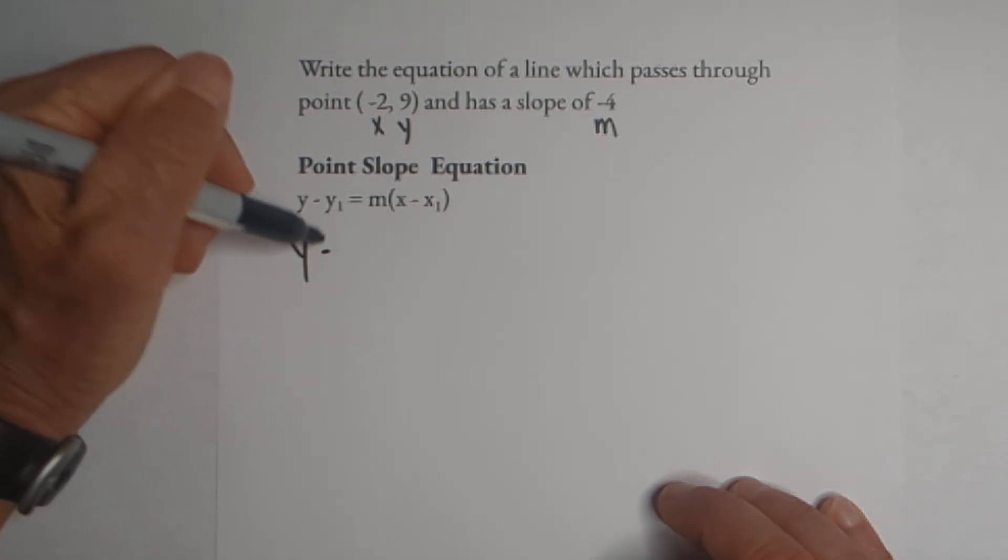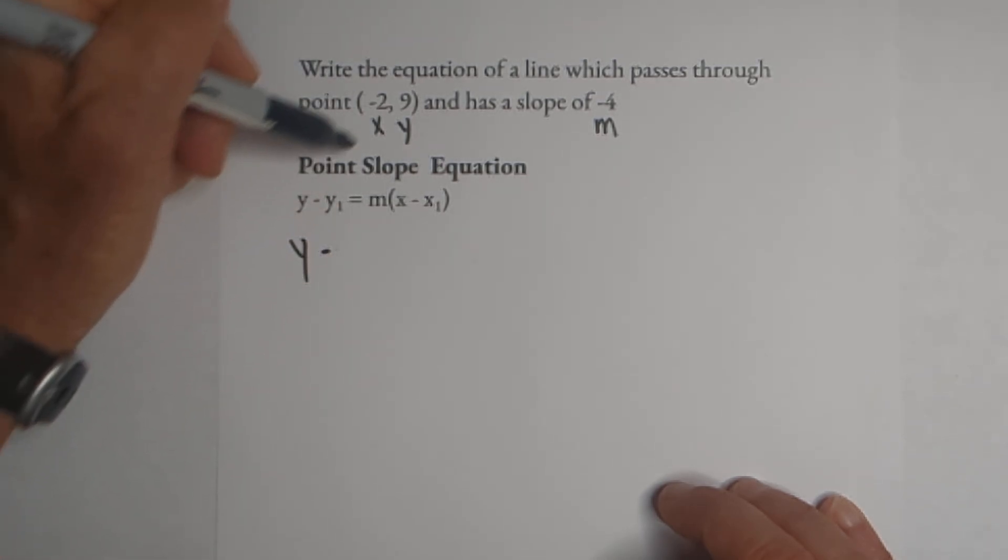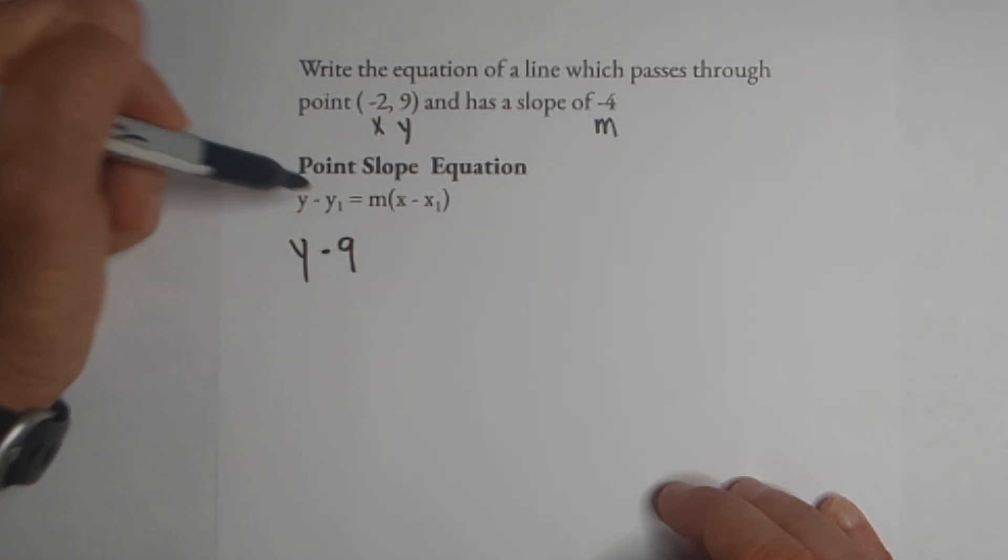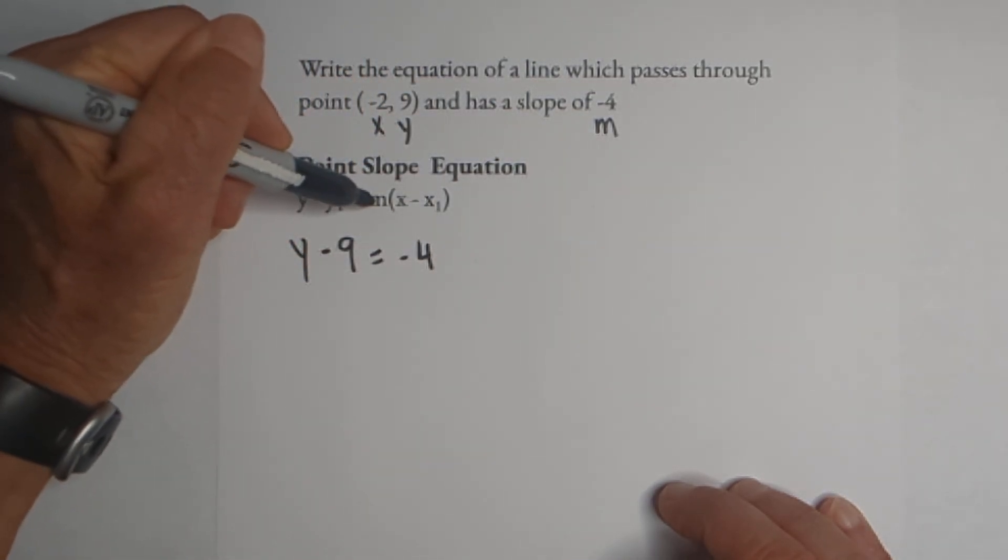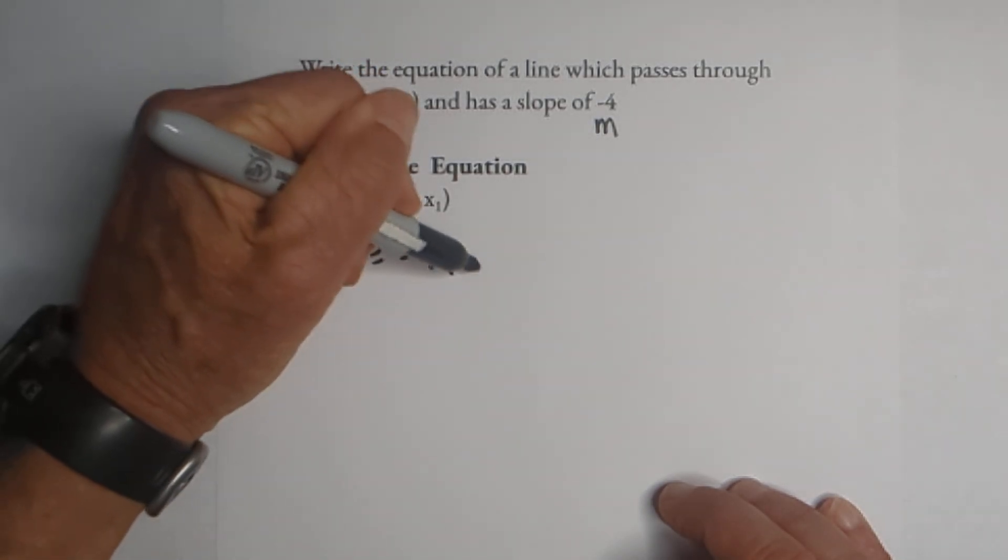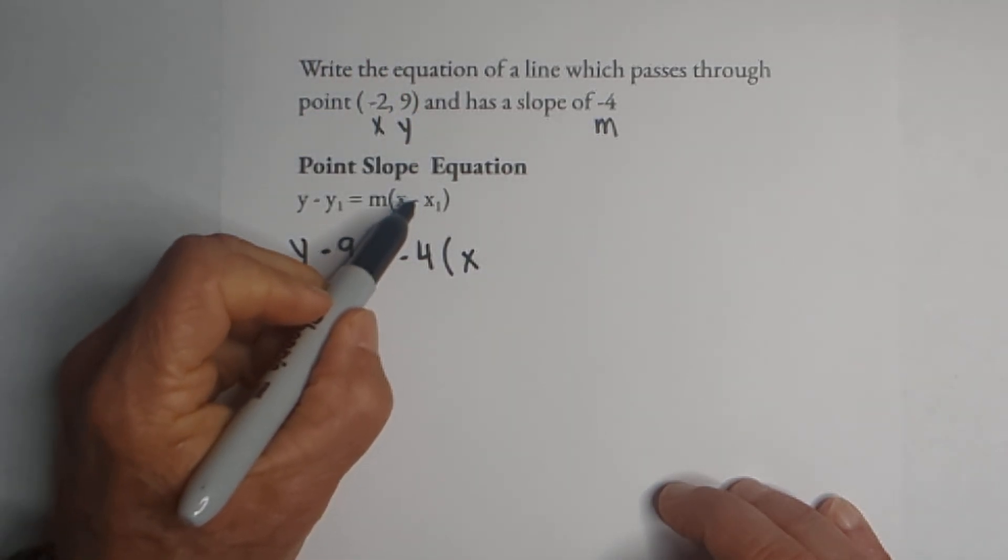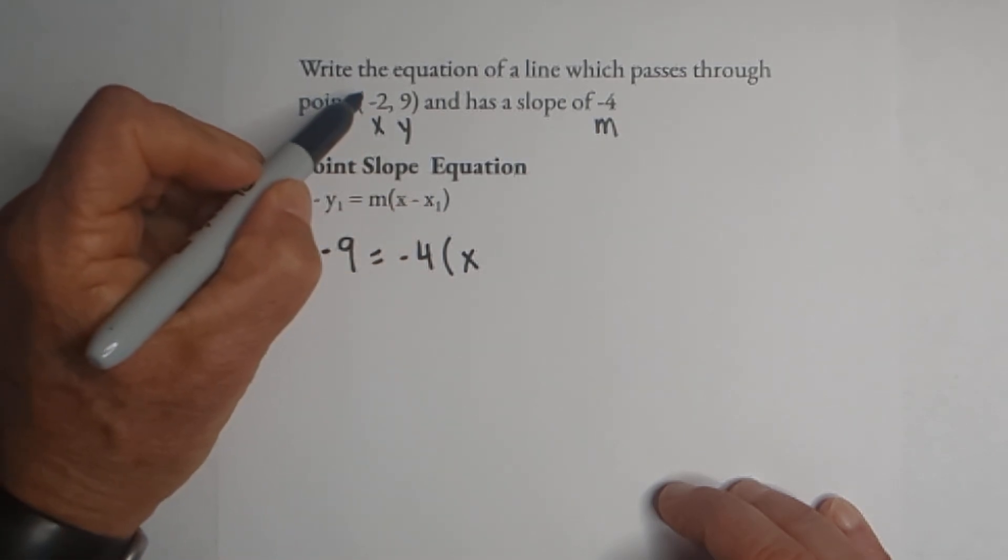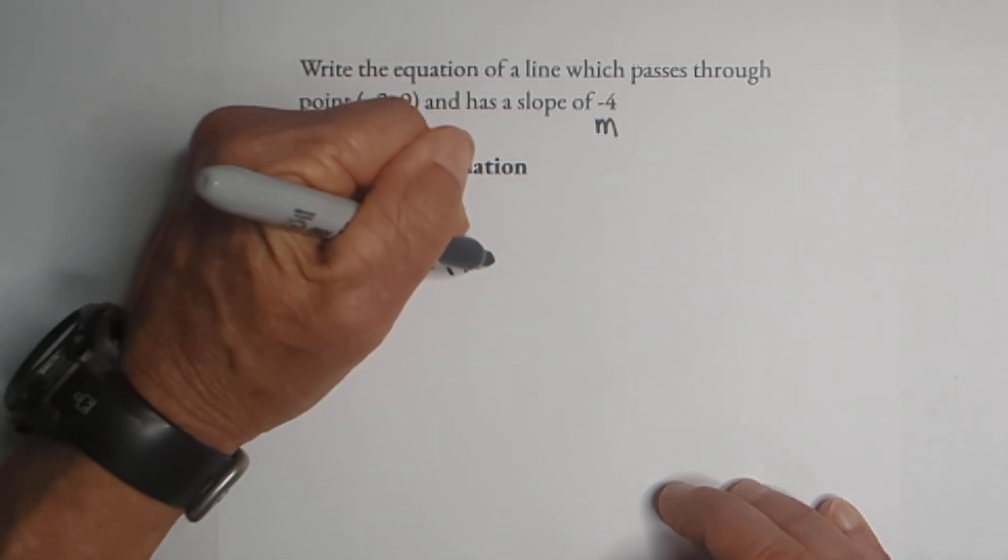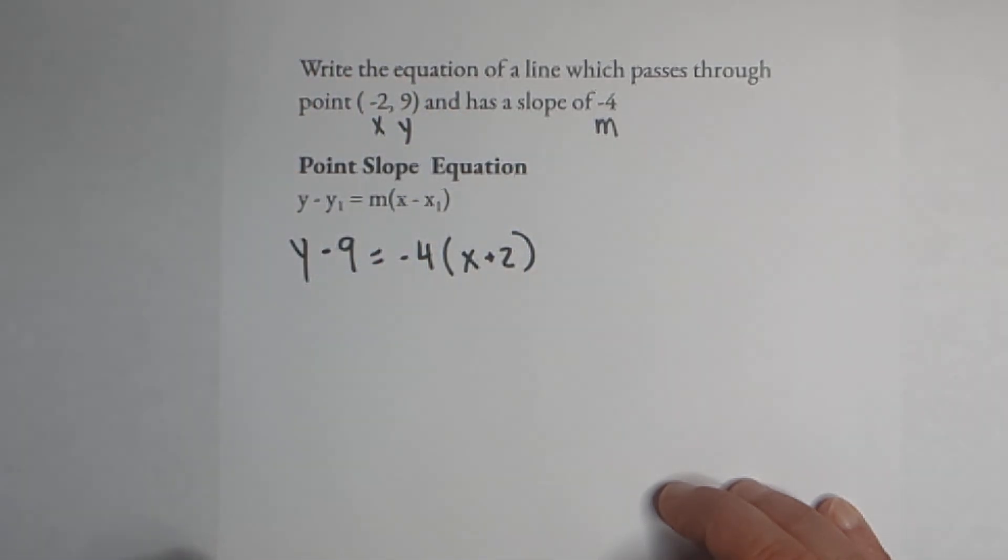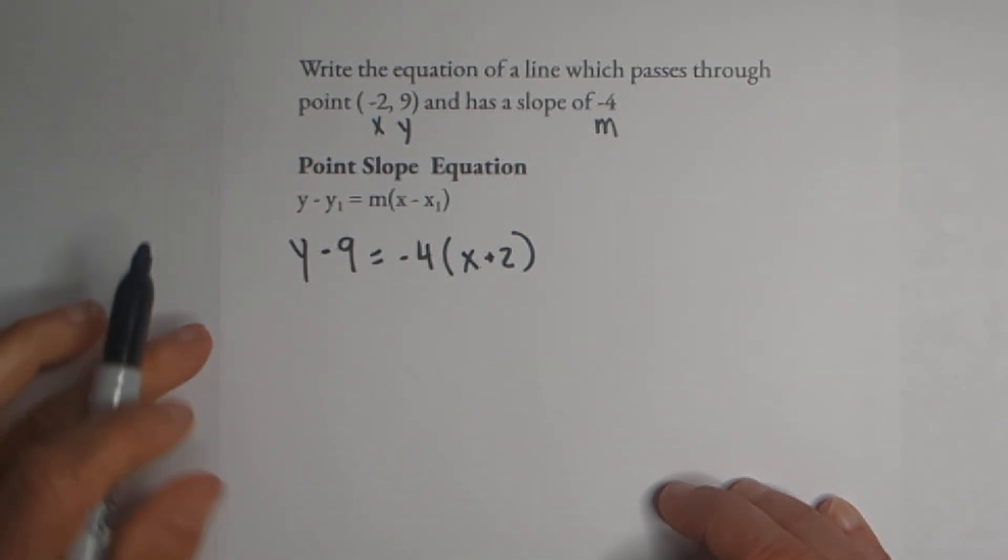We have y minus, and then y₁ will be negative nine, equals, we have a slope of negative four which is m, times x, and now remember it's minus x and we have a negative two. A negative and a negative becomes a positive two. So there it is in point-slope form.